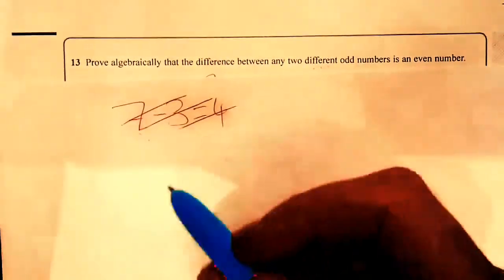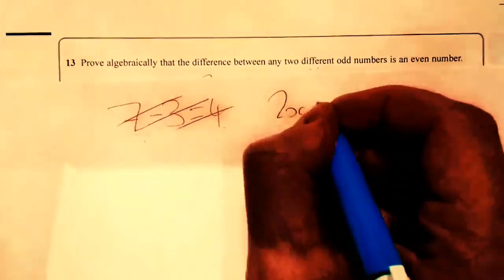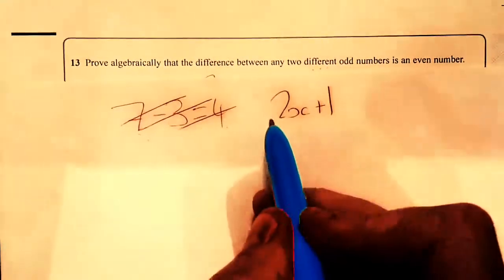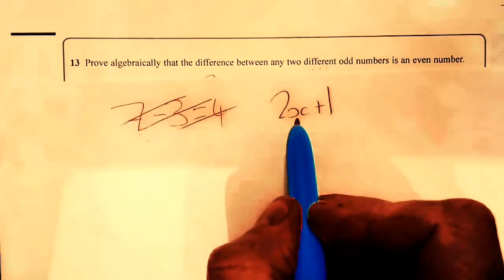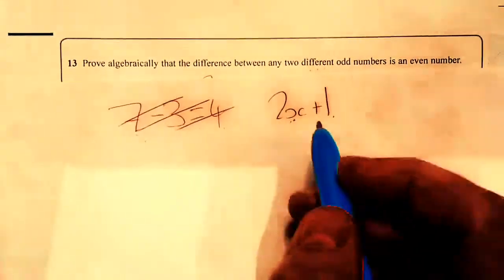So we need to make up an expression to represent an odd number. I'm doing this. Now 2 times anything, times any number, plus 1 will always be odd. I don't care what number you put in for x.